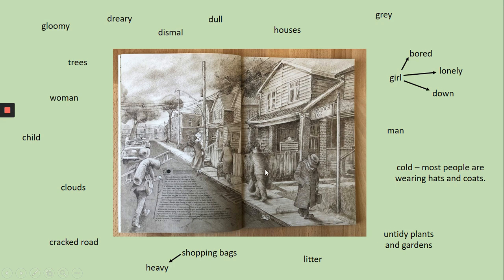This gent is holding some shopping bags - you can see they're heavy because he's all hunched over, so he must be feeling a little bit tired and fed up. There's some litter on the floor - it's a metal drinks can. We've got an untidy garden with bits of grass and plants poking through on the pavement. The gardens here are a bit overgrown, and there's a fence that's a little bit dishevelled and worse for wear.